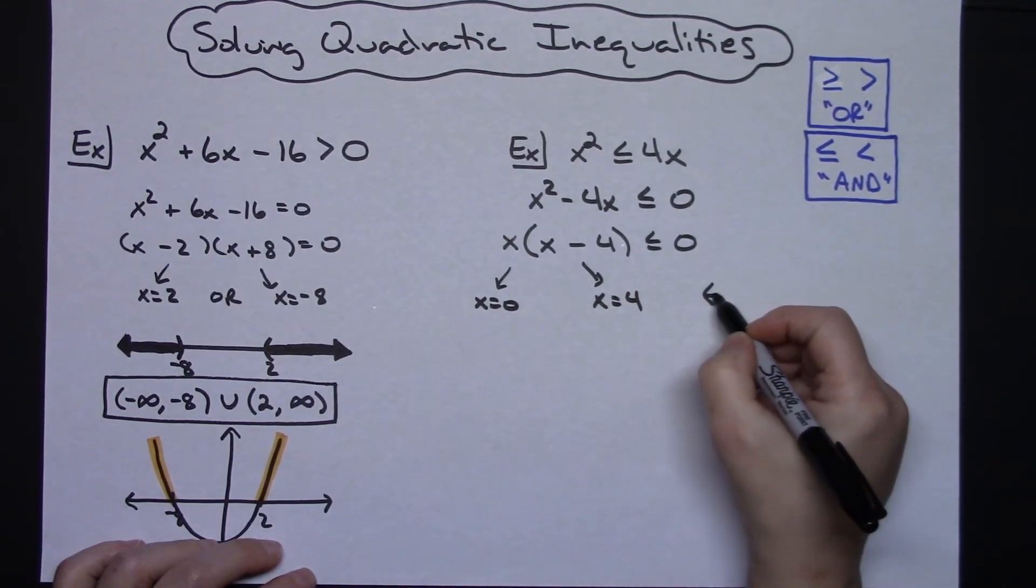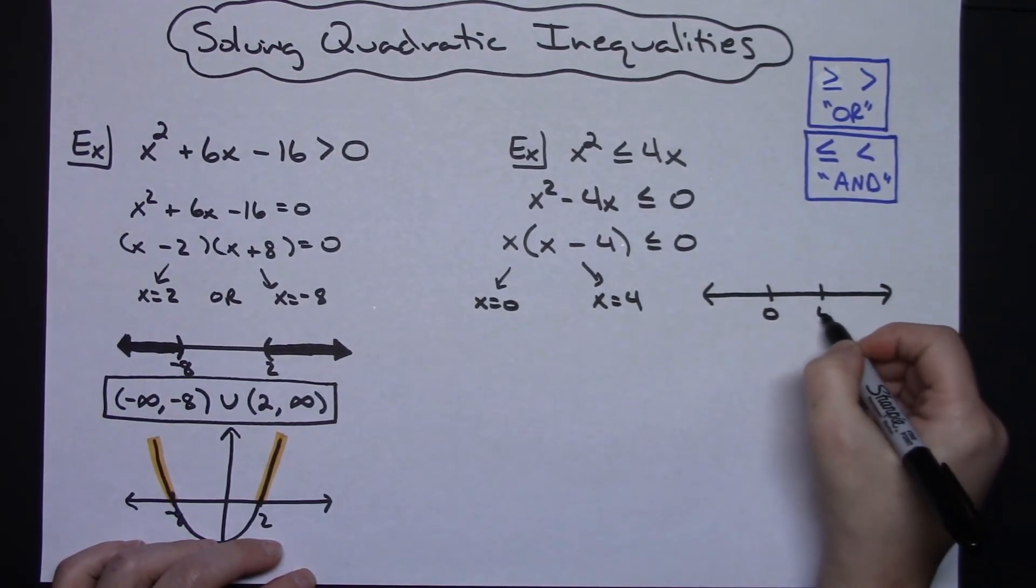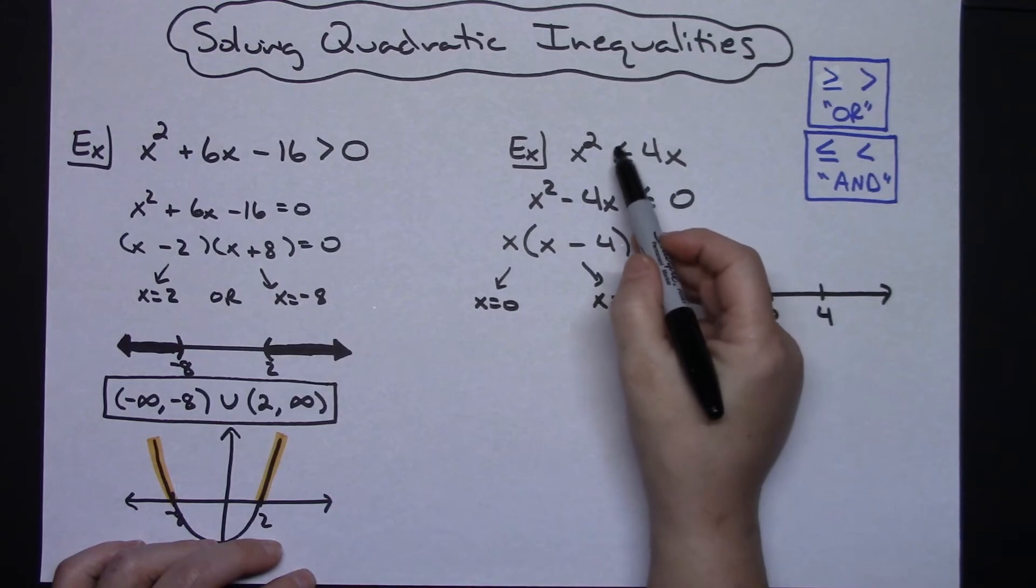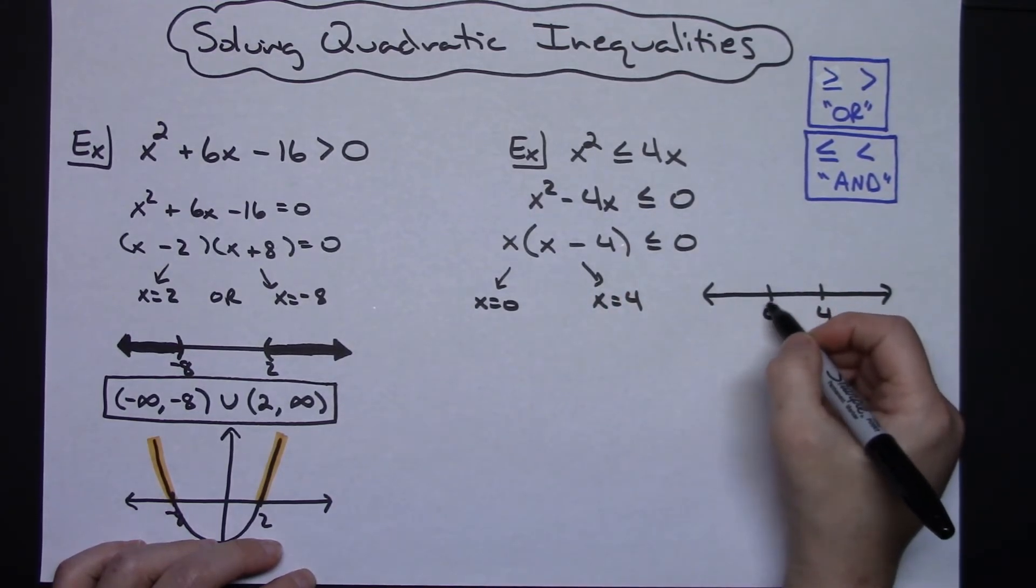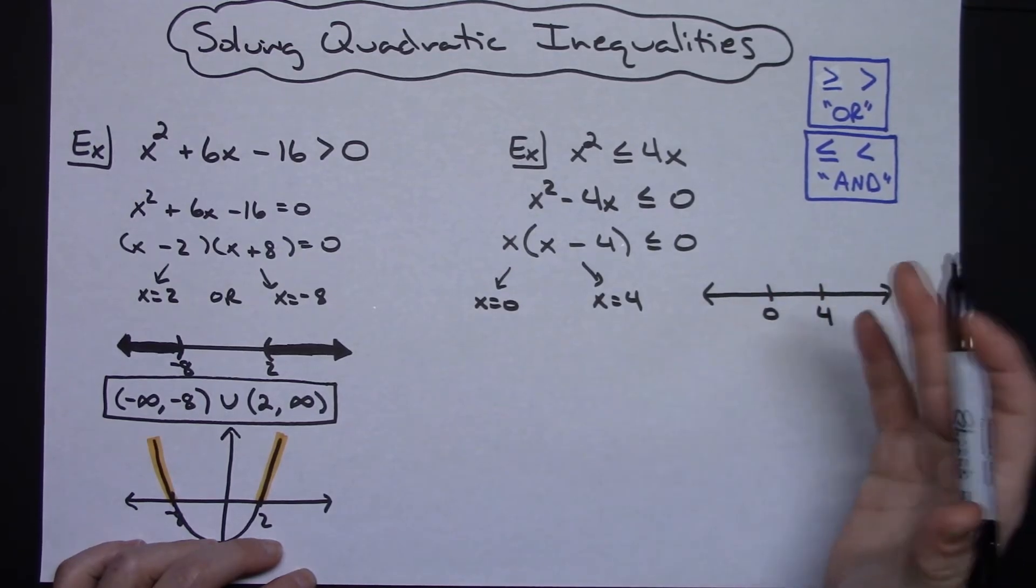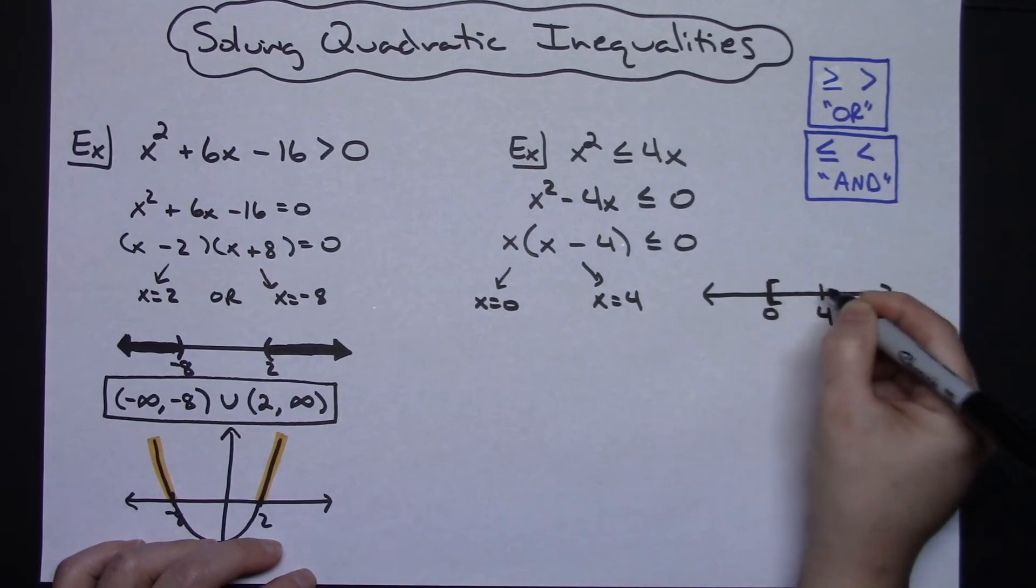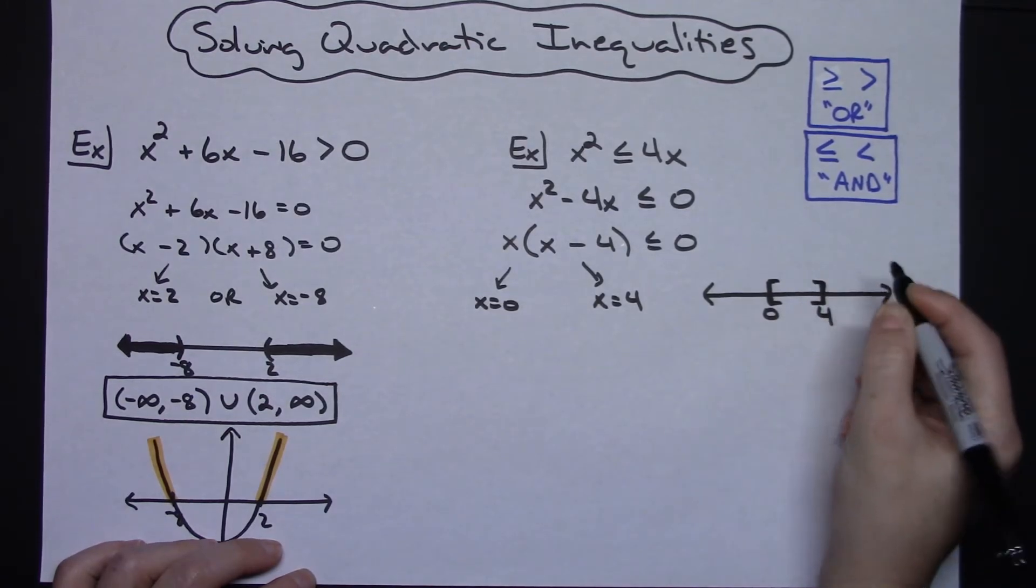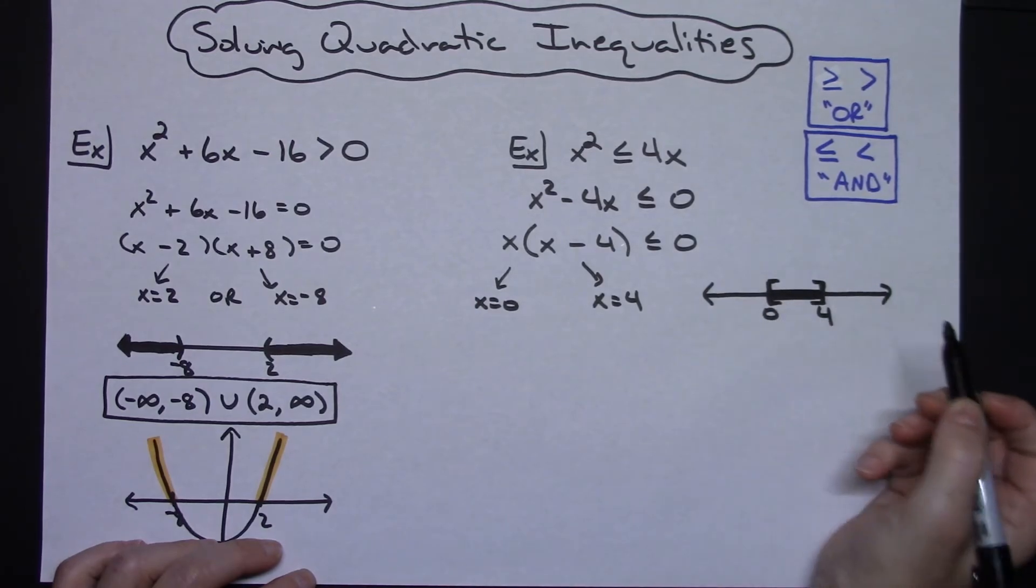Looking at this on a number line, my 0 would be on the left, my 4 would be on the right. And it's got the equal to part, which means then these would be, if you're doing open and closed dots, closed dots. If you're doing it more on lines of the interval notation, you'd have some square brackets here. And because it is an AND, all those solutions would show up in the middle.